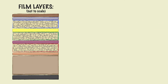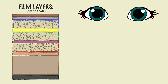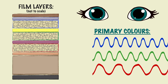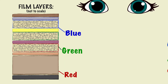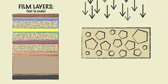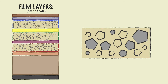Film responds to light and colour in a similar way to that of a human eye. Each of these emulsion layers is responsible for capturing one of the three primary colours — blue, green, or red. This is inspired by how the cones in our eyes perceive colour, each responding to one of these three wavelengths. Similarly, when film is exposed to light, the silver halide crystals will respond to the wavelengths according to which layer they're in.